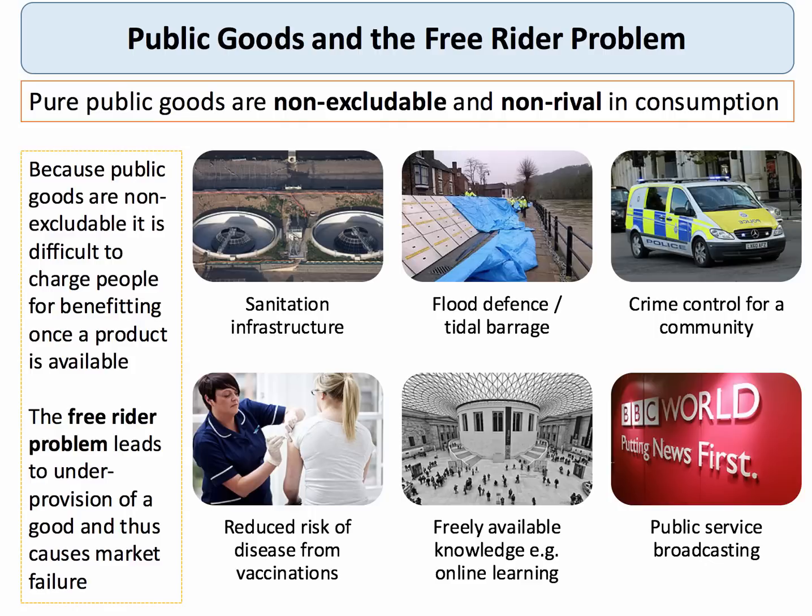Let's think about public goods. Pure public goods are non-excludable and non-rival. Non-excludable means it's hard, sometimes impossible, for a producer to prevent — at reasonable cost — someone from consuming the good or service, even if they haven't made a payment for it. Non-rival means that if you provide the good for one person, it doesn't reduce the amount that's available to somebody else.